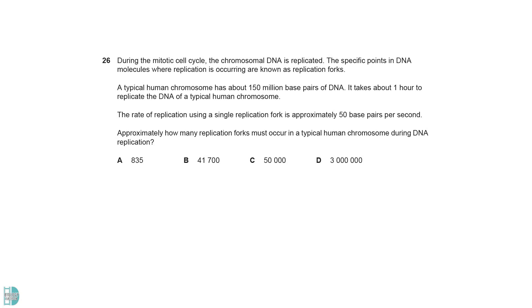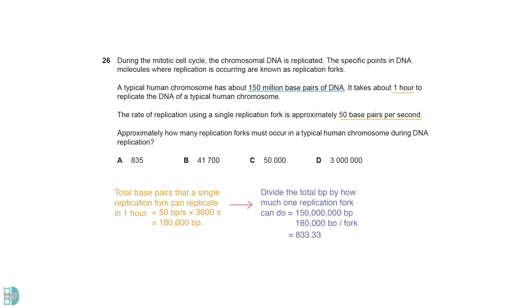Total base pairs that a single replication fork can replicate in one hour is 50 base pairs per second times 3600 seconds. Total base pairs to replicate is 150 million base pairs. We divide that by how much one replication fork can do. The nearest value is 835.